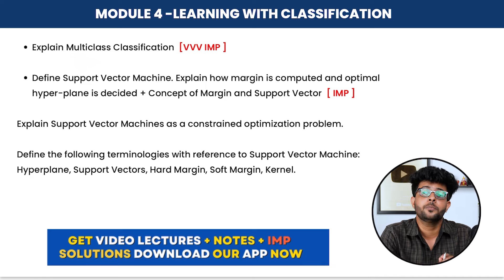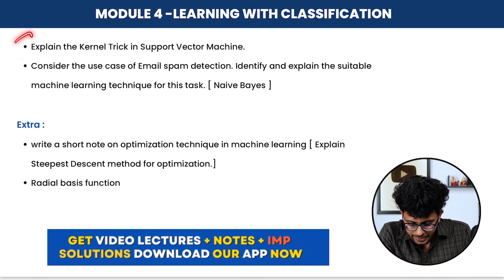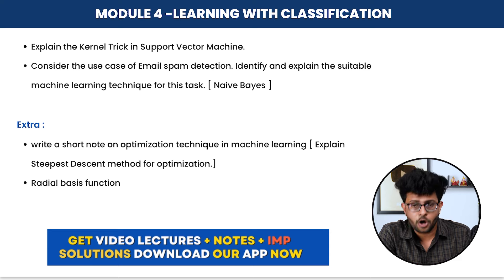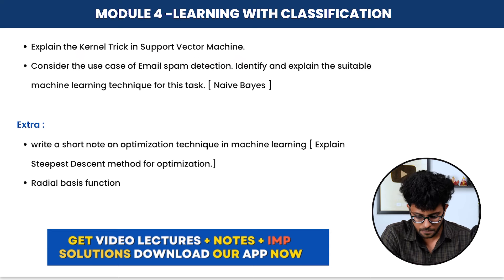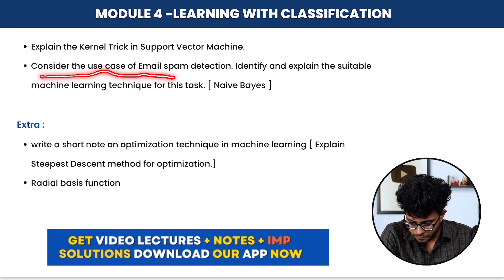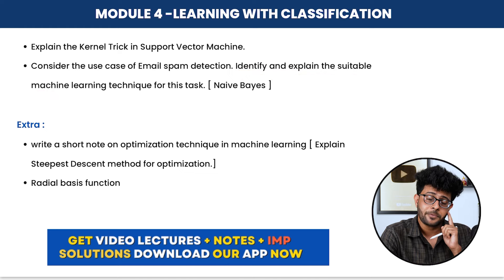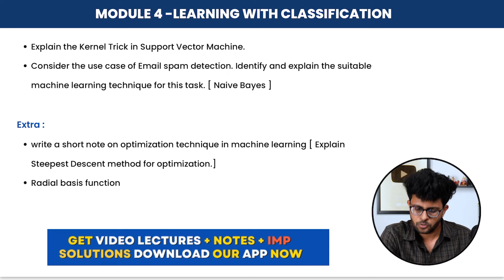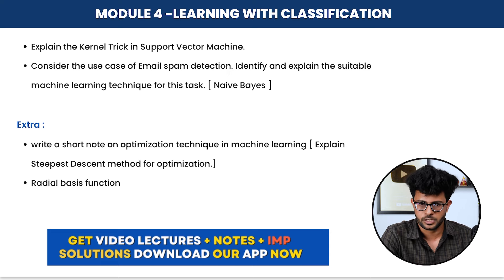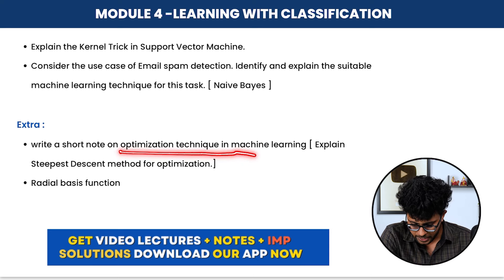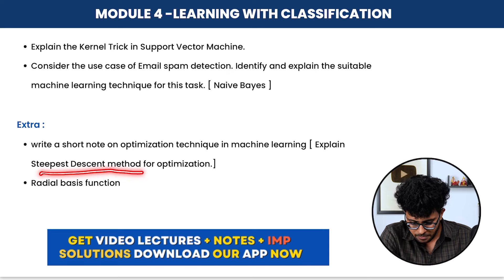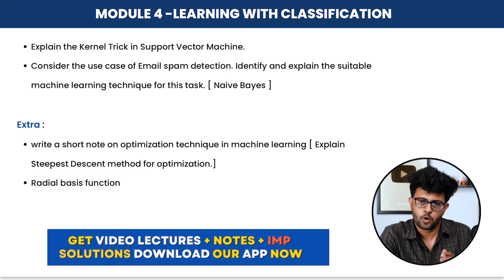After multi-class classification and SVM, Module 4 also covers the kernel trick in support vector machine. A common use-case question is: identify and explain a suitable machine learning technique for email spam detection. Additionally, you should know optimization techniques in machine learning, specifically the gradient descent method.